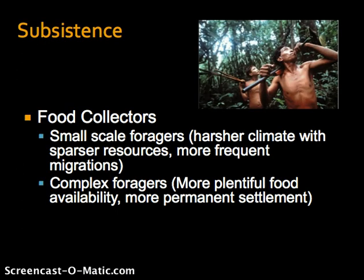Food collectors can either be small-scale foragers, where you have harsher climates with sparser resources and therefore more frequent migrations in order to make the seasonal round. On the other hand, complex foragers have more plentiful food availability and more permanent settlement. An example of this would be the Natufian culture, who relied on wild gazelles as well as wild grains, or the Tlingit of the northwest coast of North America.